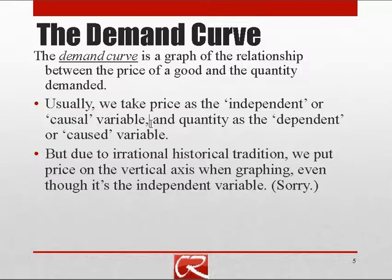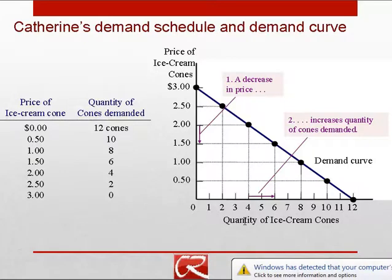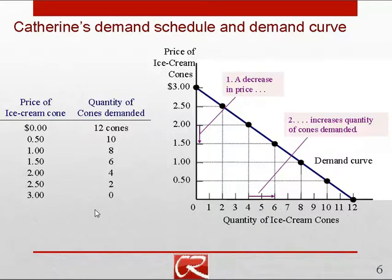We use the data from the demand schedule to build a demand curve. A demand curve is a graph of the relationship between the price of a good and the quantity demanded. Ordinarily you put the independent variable on the horizontal axis and the dependent variable on the vertical axis, but because of historical tradition we put price on the vertical axis, even though it's price that determines quantity and not the other way around.